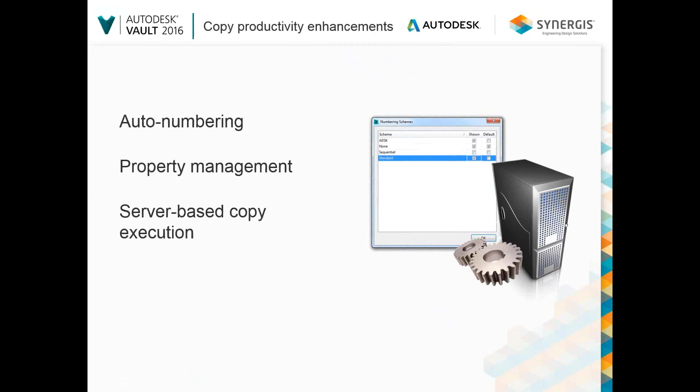As per one of the top requests for change, Autodesk has automated file numbering built right into the copy design process, which will remove the need for a secondary step. You can also immediately specify the category to place each file into and modify properties straight from the design tool, eliminating multiple steps. The copy design process will now execute faster because it's running on the server, not your local machine, removing the need to copy files to and from your server.